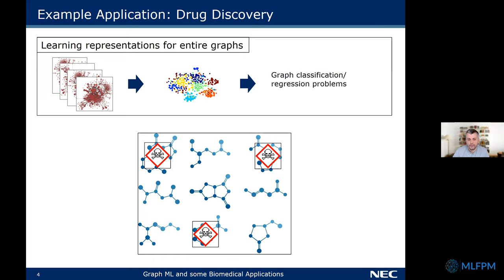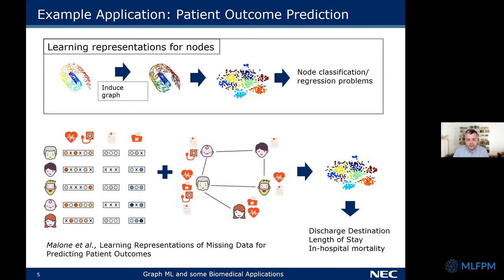Let's go through some examples of how we have used representation learning for graphs in the biomedical domain. In drug discovery, chemical compounds can be represented as graphs, and the problem is mapping a database of these compounds into vector representations so that you can classify or solve a regression problem over them. For patient medical records, we induce a graph representation and apply graph neural networks for node classification — predicting things like discharge destination, length of stay, and in-hospital mortality.